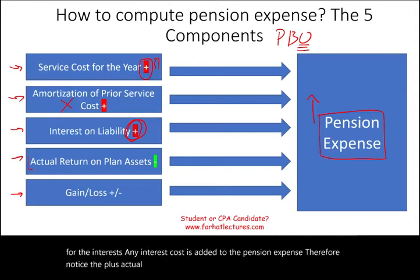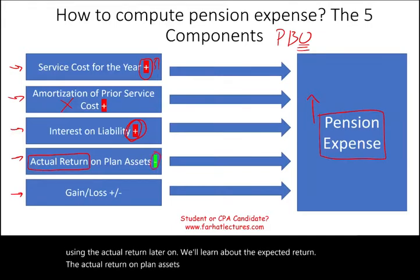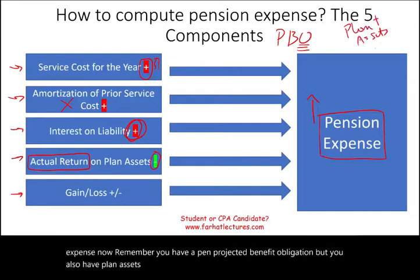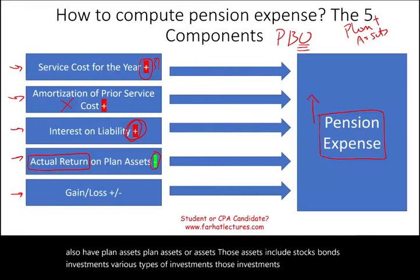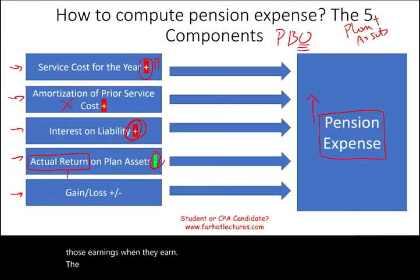Actual return on plan assets — we're going to be using the actual return in this example; later we'll learn about the expected return. The actual return on plan assets is a negative — it's going to reduce your pension expense. You have a projected benefit obligation but you also have plan assets, which include stocks, bonds, and various types of investments. Those investments will earn you dividends, interest, capital gains, and capital losses. When they earn the actual return, they reduce your pension expense because they are contributing to your plan assets.